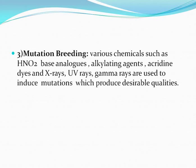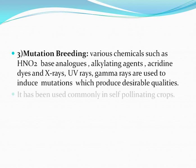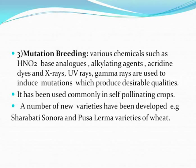Mutation breeding: various chemicals such as HNO2, base analogues, alkylating agents, acridine dyes, and radiation including X-rays, UV rays, and gamma rays are used to induce mutations which produce desirable qualities. It has been used commonly in self-pollinating crops. A number of new varieties have been developed — examples are the Sharbati Sonora and Pooza Lerma varieties of wheat.